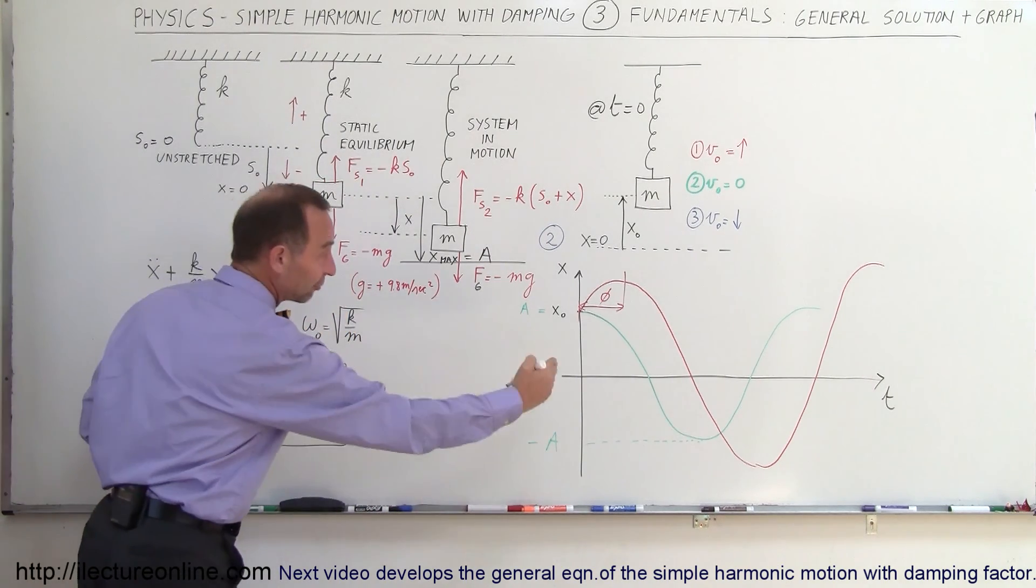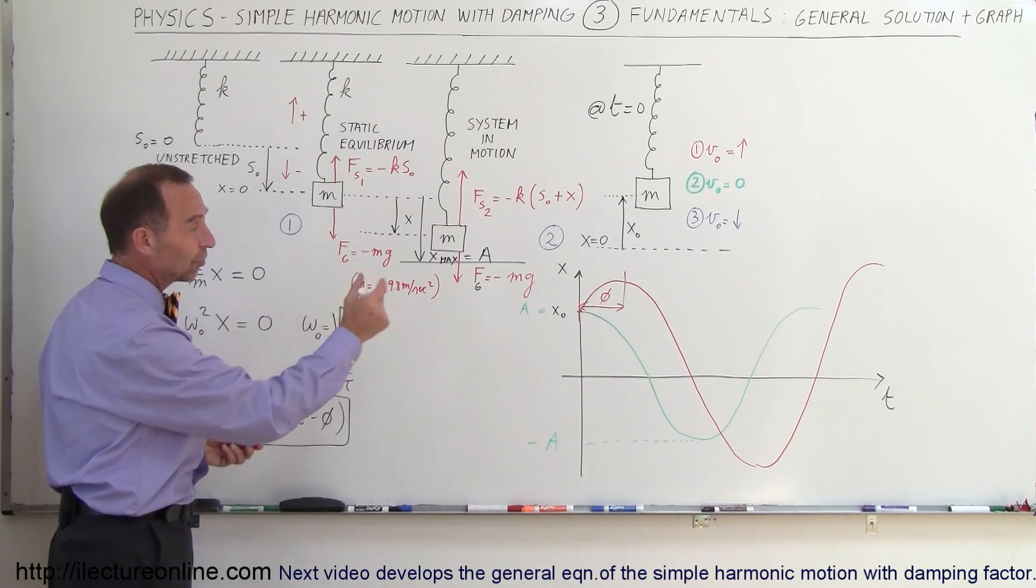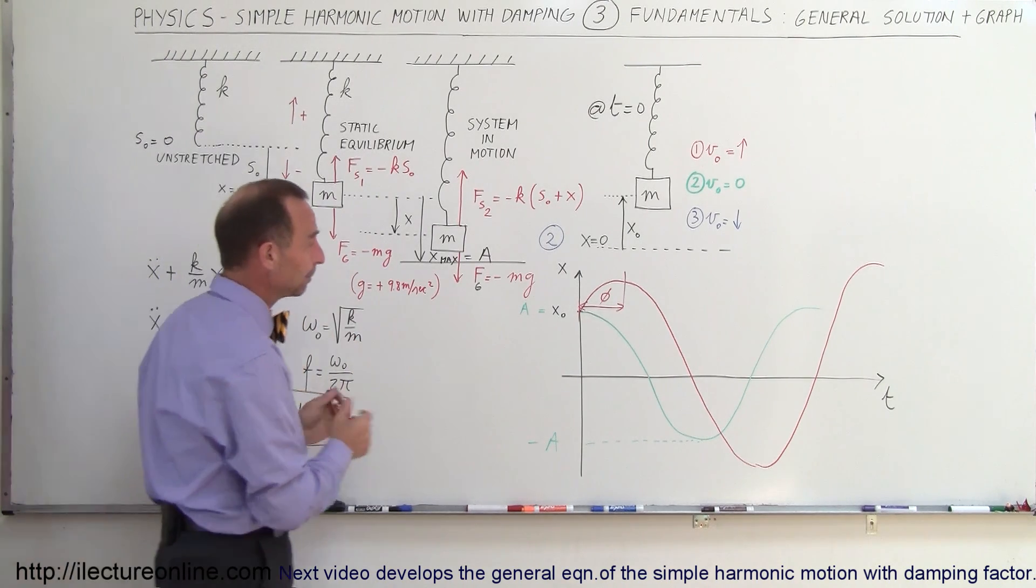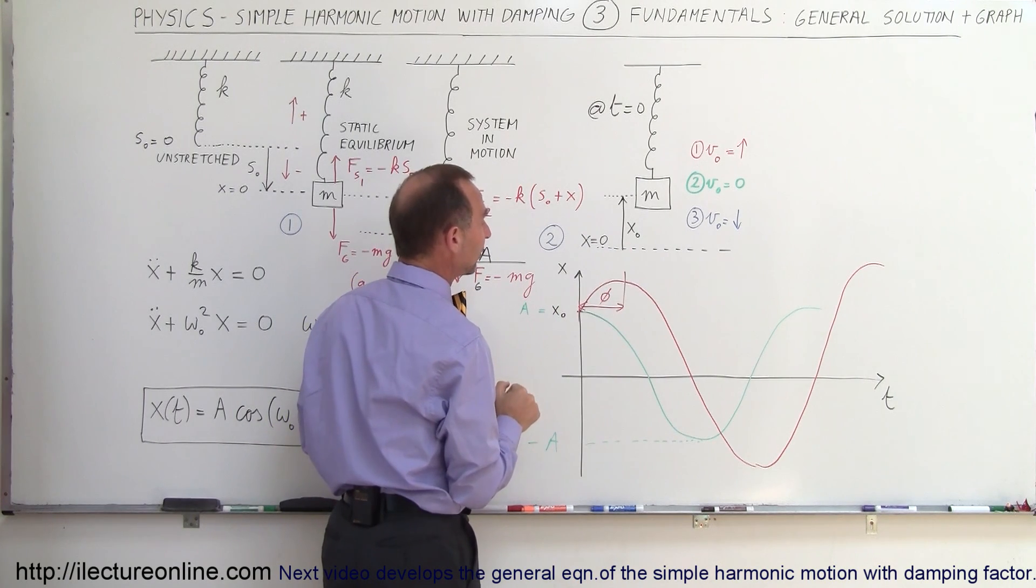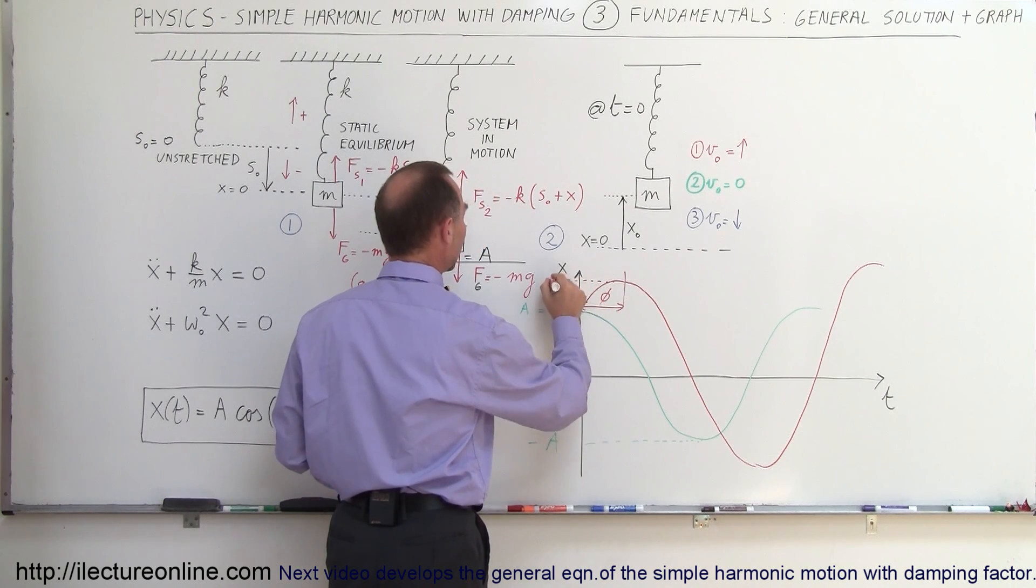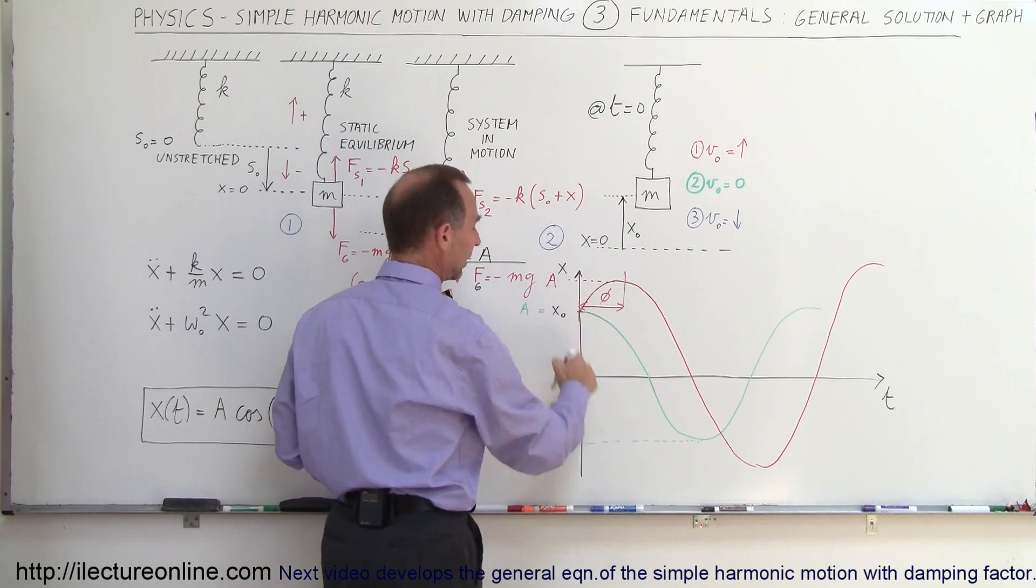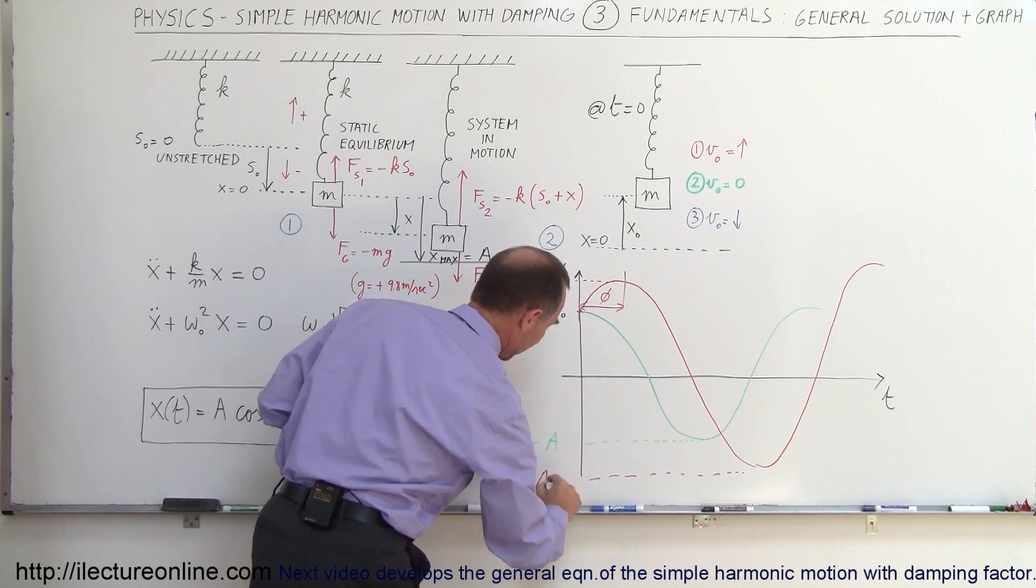Remember, a minus sign means it shifted to the right, and so in this case we would have a minus phi, a certain distance to the right from the initial point right here before we reach the maximum. Notice in this case the amplitude would be greater, would be a right here, and of course here the negative amplitude would be right here.